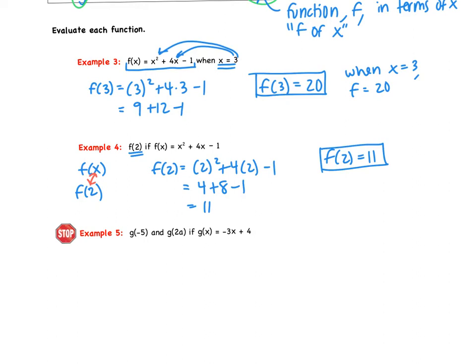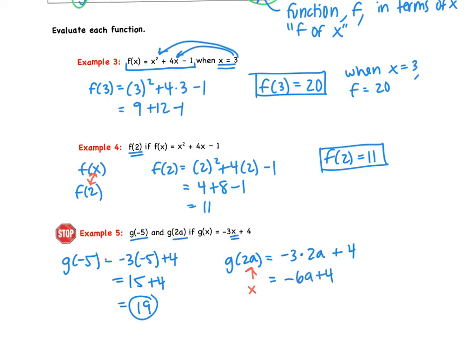Okay, last example here. We are finding g of negative 5 and g of 2a. g of negative 5, I'm plugging in a negative 5 for x. So I get negative 3 times negative 5 plus 4. So I get 15 plus 4, which is 19. Okay, so for g of 2a, what this notation is saying is in place of x, we're putting a 2a. So negative 3 times, instead of x, we're replacing it with 2a. So negative 3 times 2 gives us negative 6a plus 4. Those are not like terms, so you do not want to combine them.